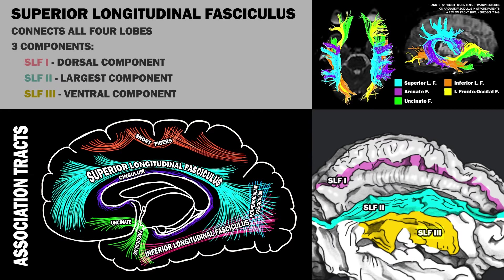SLF3, the ventral component of the superior longitudinal fasciculus, runs from the supramarginal gyrus to the inferior premotor and prefrontal cortex. It is thought to transfer somatosensory information, such as language articulation.